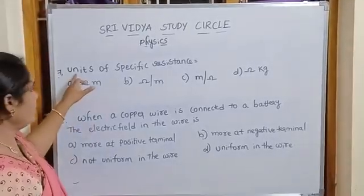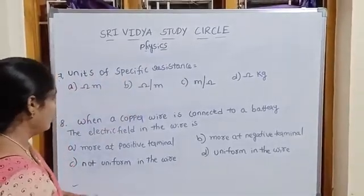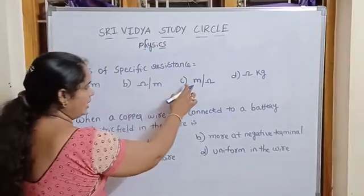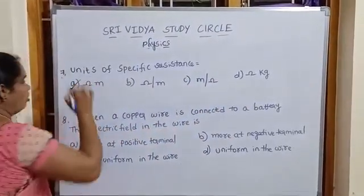Next, units of specific resistance. Ohm meter, Ohm by meter, meter by Ohm, Ohm kg. Option is Ohm meter.